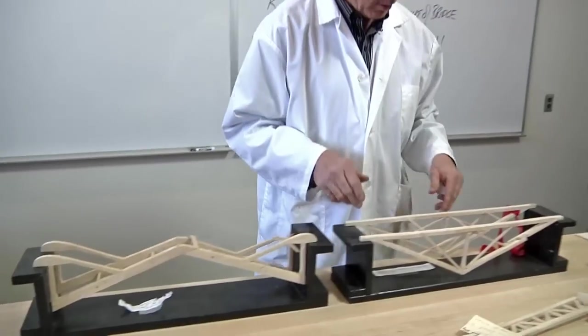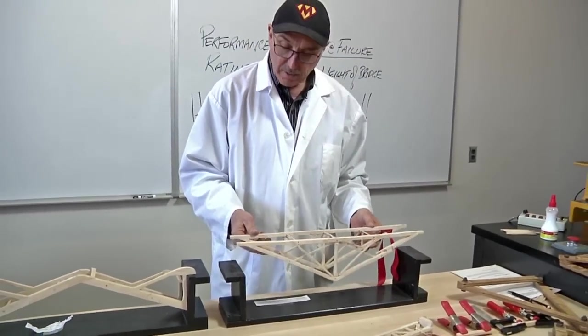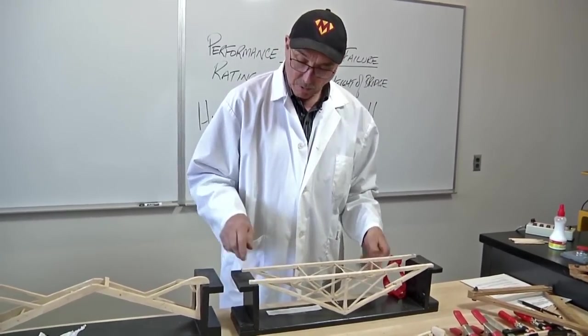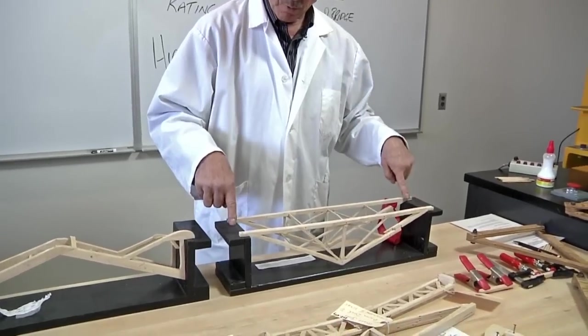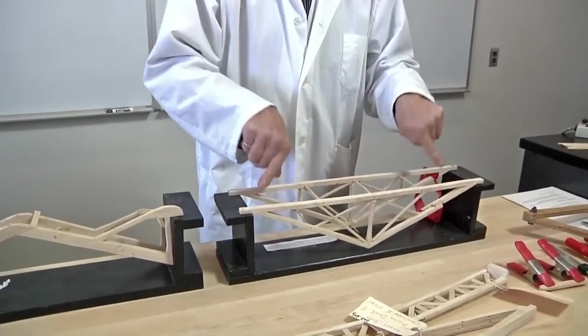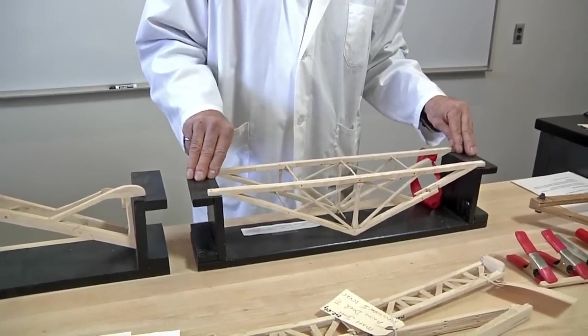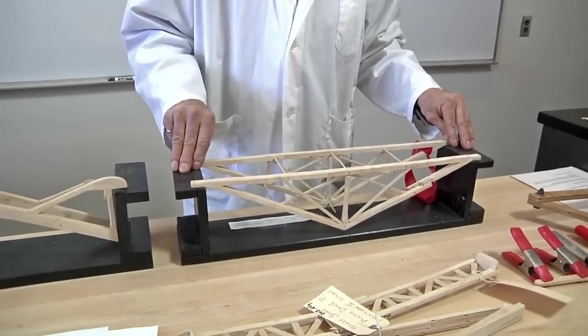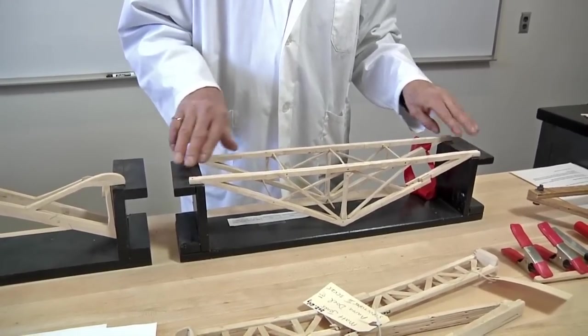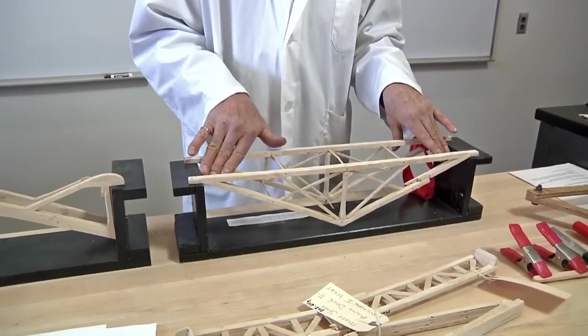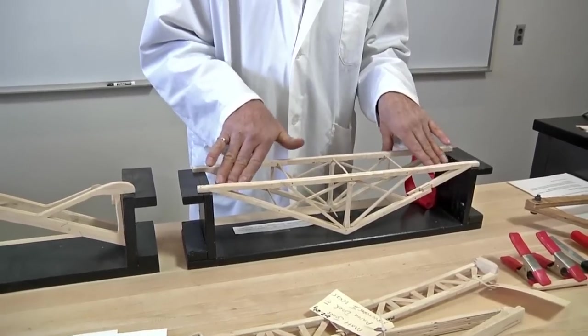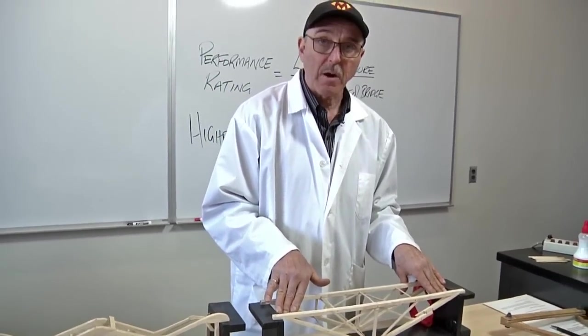When we come over here and look at the true truss shape, the true truss only uses the testing jig for vertical support. There's nothing pushing against the sides of the support in any form of a true truss bridge. So to qualify as a true truss, there can be absolutely no dependence on the testing jig for lateral support of any forces that the bridge has to carry.